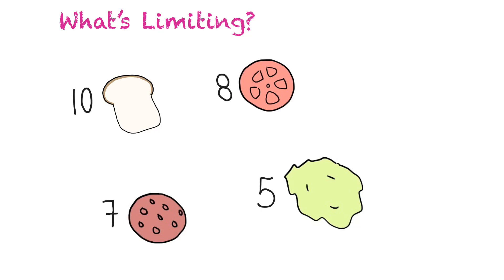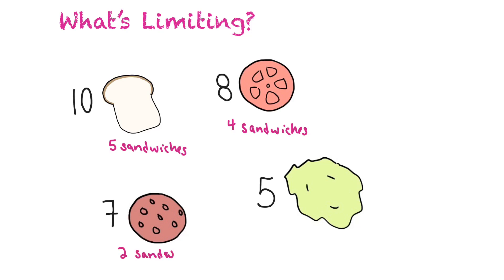If we have 10 pieces of bread and need two per sandwich, we can make five sandwiches. If we have eight tomatoes and need two each, we can make four sandwiches. We have seven pieces of salami but need three per sandwich, so we can only make two sandwiches. And with five pieces of lettuce, needing only one per sandwich, we could make five sandwiches.